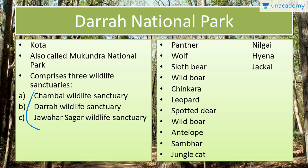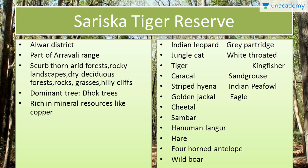Here we have Sariska Tiger Reserve in Alwar district, which is part of the Aravalli range. You will see here rocky landscapes and hilly cliffs. The area has scrub thorn and dry deciduous forest grasses. The dominant tree found here is the dhok tree. This tiger reserve also has rich copper deposits. Animal species include Indian leopard, jungle cat, tiger, caracal, striped hyena, golden jackal, cheetal, sambar, Hanuman langur, hare, four-horned antelope and wild boar. Birds found here include grey partridge, white-throated kingfisher, sand grouse, Indian peafowl and eagle.